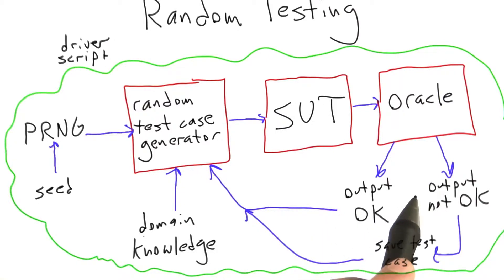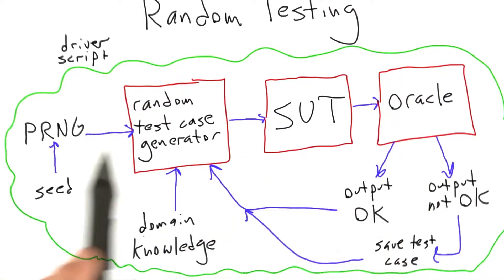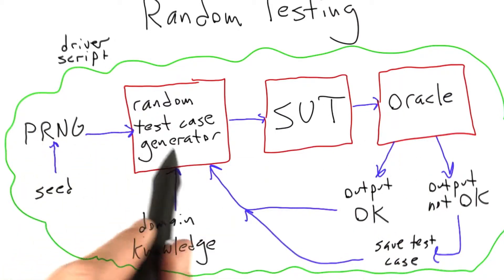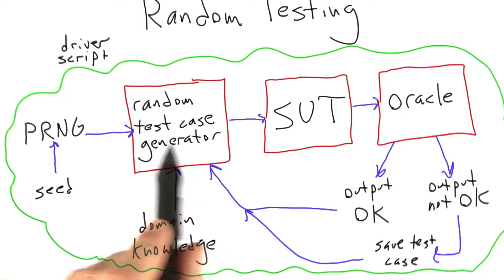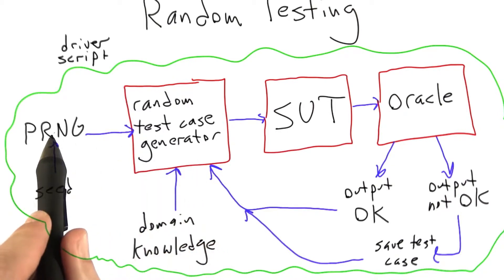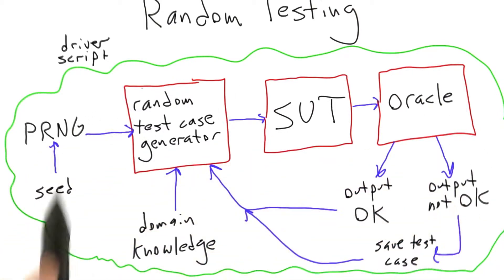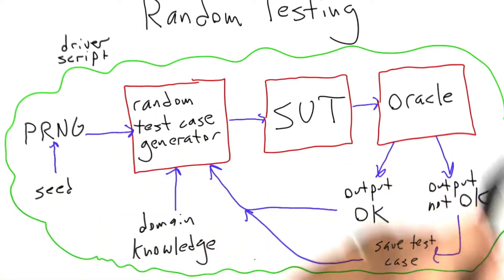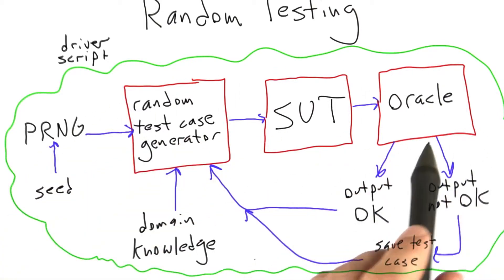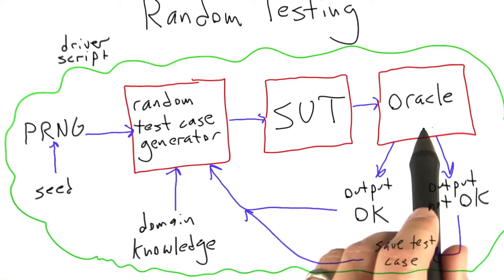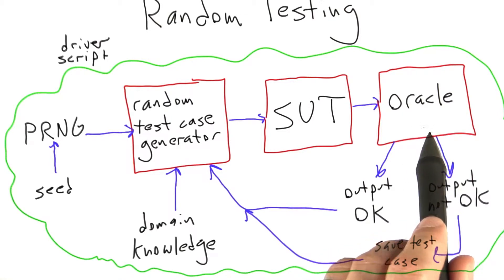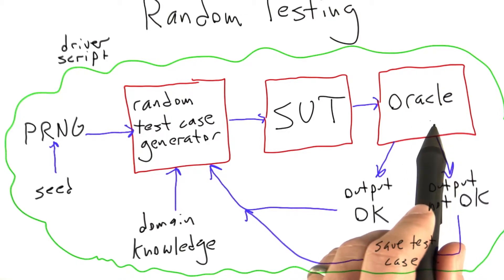Going back to the diagram, what we just saw was exactly an example of this general outline. CSmith was the random test case generator. It was given seeds by a driver script. The driver script ran the tools in a loop, and the Oracle, in this case, was simply looking for compiler crashes.